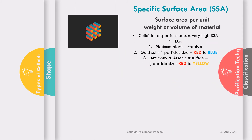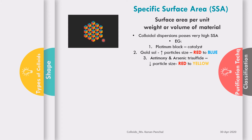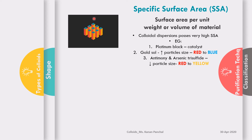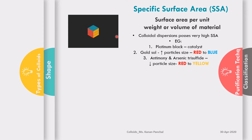To understand specific surface area, consider this animation: a single cube divides itself into multiple smaller units. The volume or weight of the single cube remains equal to the sum of the volumes or weights of the smaller units. However, the surface area changes — the surface area of the single cube is less than the total surface area of the multiple smaller cubes, because as the cube divides, new surfaces are exposed. Specific surface area is defined as the surface area per unit weight or volume of the material.